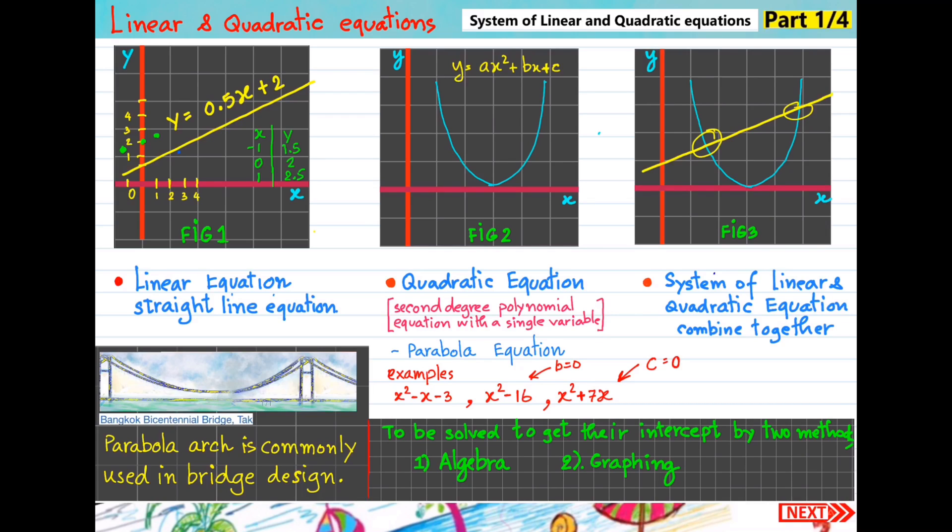Take a look at figure 1. y equals 0.5x plus 2. The equation was given. If we put x value minus 1, 0, 1, we will get y value by substituting x in the equation. We plot the graph and then connect dot by dot, so it will provide a straight line. We call this a linear equation.